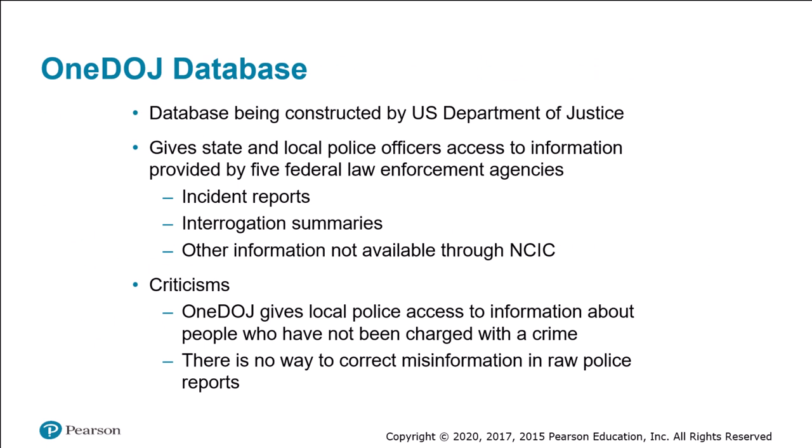The One DOJ database, managed by the U.S. Department of Justice, provides state and local police officers access to information supplied by five federal law enforcement agencies, including the FBI, the Drug Enforcement Agency, the Bureau of Alcohol, Tobacco, Firearms and Explosives, the U.S. Marshals Service, and the Bureau of Prisons. The database stores incident reports, interrogation summaries, and other information not presently available through the NCIC. At the end of 2006 it already contained more than one million records, but critics point out that it gives local police officers access to information about people who have not been arrested or charged with any crime.